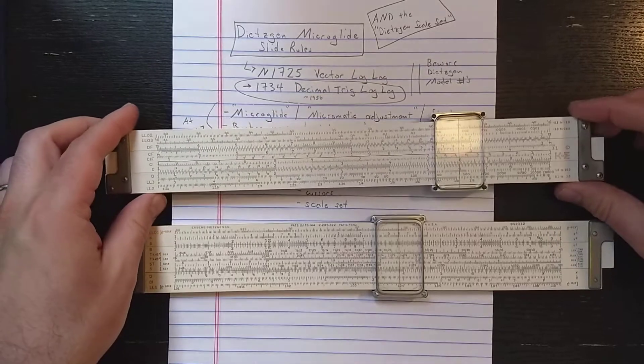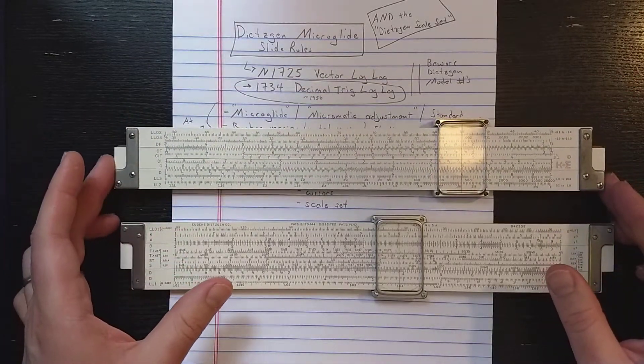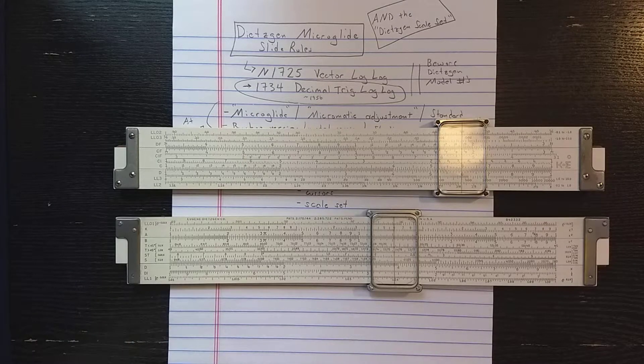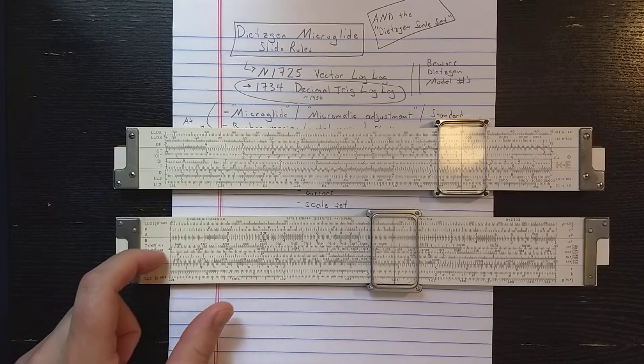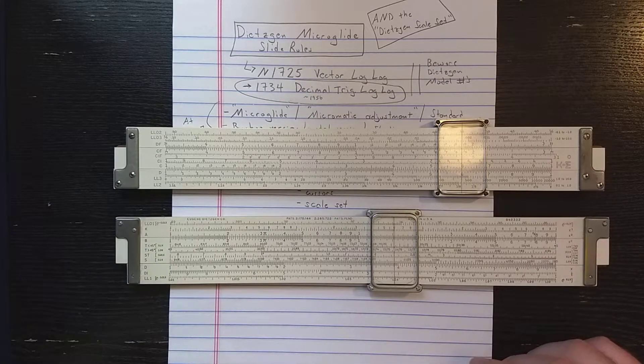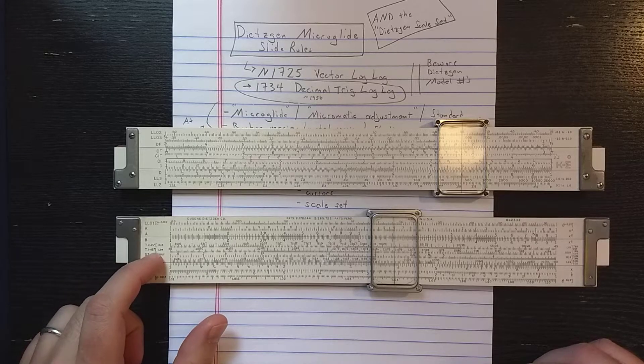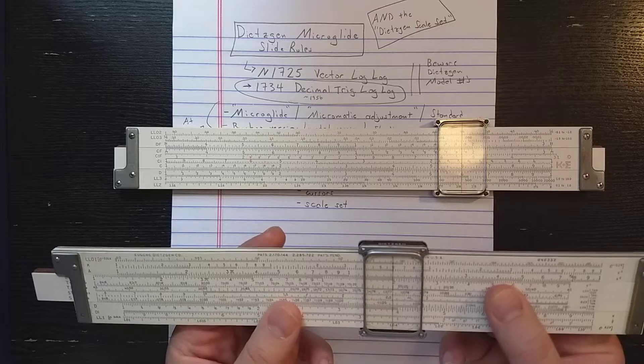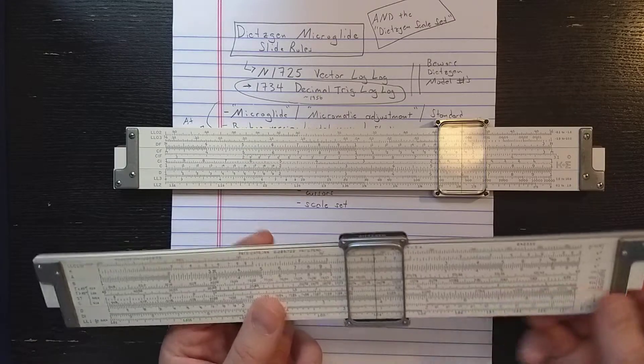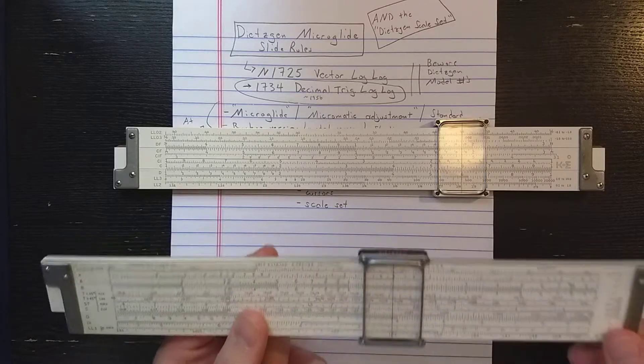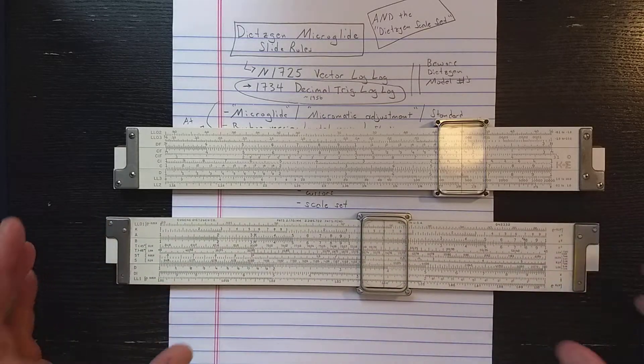However, if you do a lot of trigonometry or you do certain vector calculations, electrical engineering calculations, sometimes having that T2 scale is useful. So I think, really, you buy the Dietzen slide roll if you are going to be using that T2 scale. I think that's how it would come down to it. Of course, or you really like the microglide construction. But if you're just talking scale set, you buy the Dietzen scale set if you want that T2 scale.